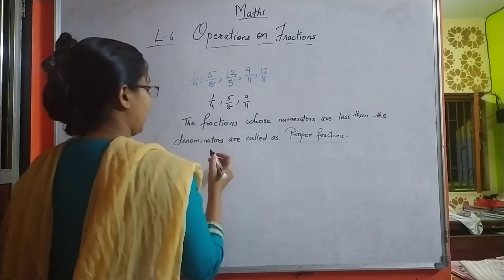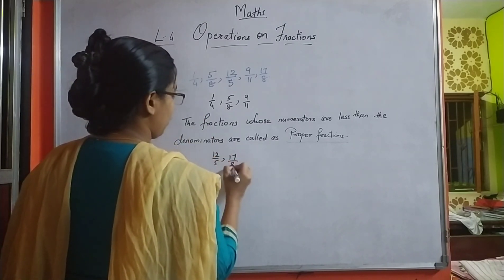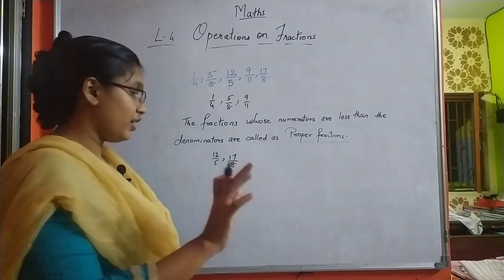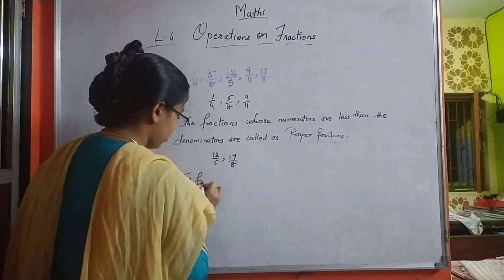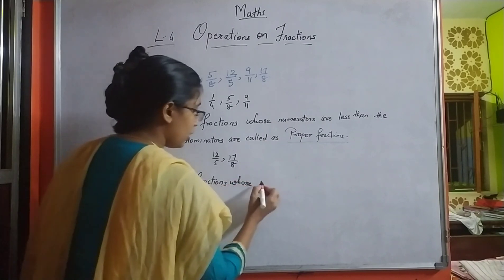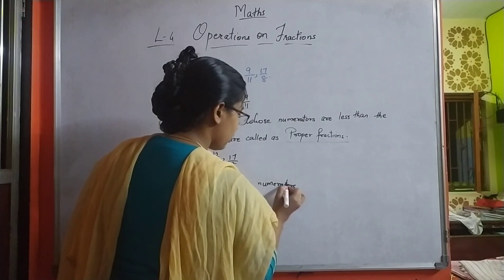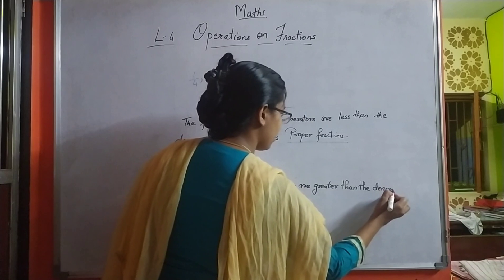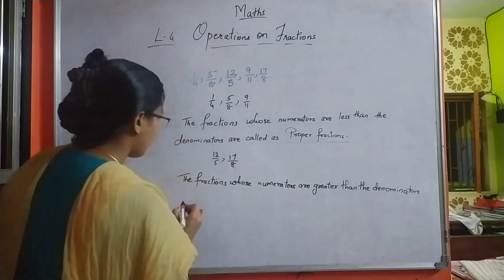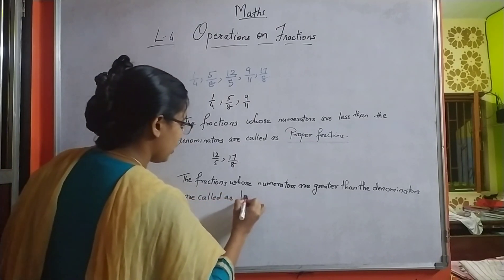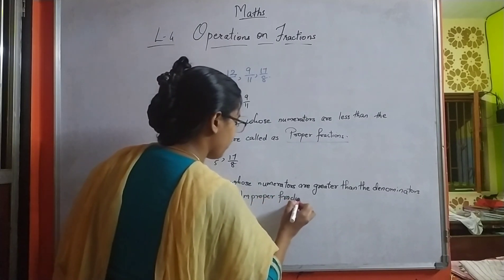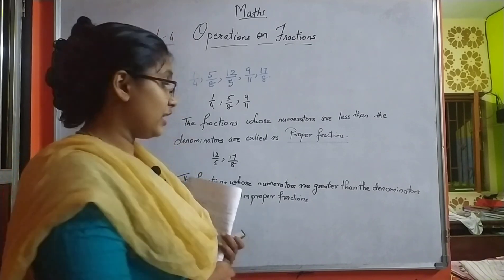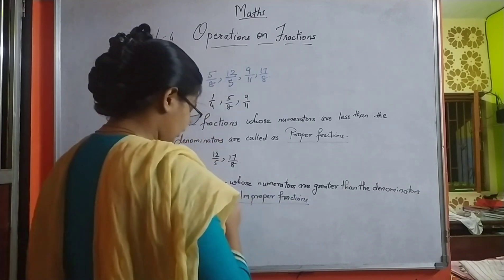Coming to the rest of the examples: I have 12 upon 5 and 17 upon 8 left. What is the difference that you see? It is just the opposite of the above example — the numerators are greater than the denominators. The fractions whose numerators are greater than the denominators are called improper fractions.